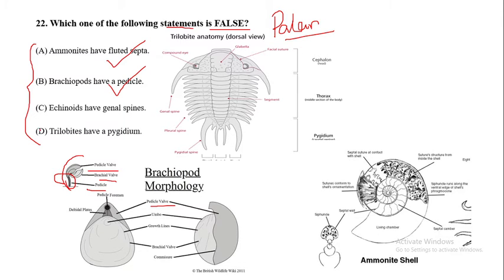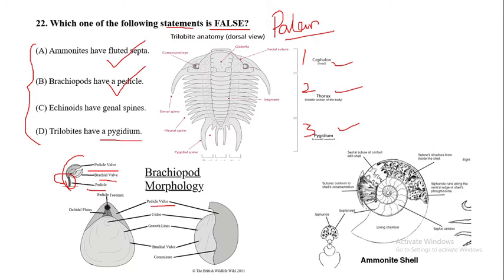Before addressing echinoids, let's look at Option D: trilobites have a pygidium. The trilobite body is divided into three parts — cephalon, thorax, and pygidium. So trilobites do have a pygidium, which is a true statement.